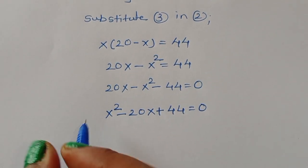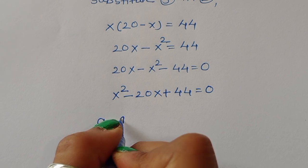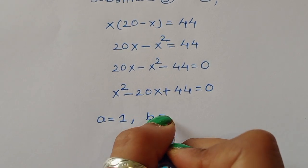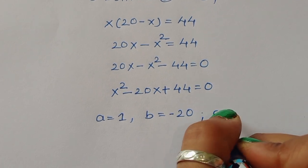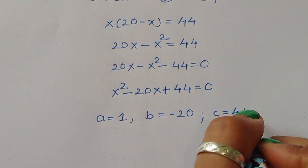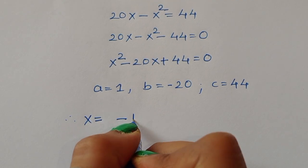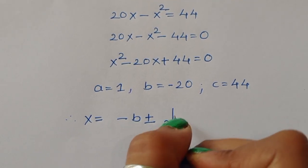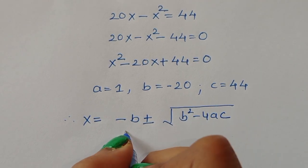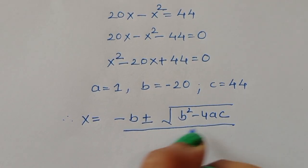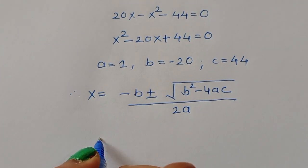Now we have one quadratic equation. We identify the coefficients: a equals 1, b equals minus 20, and c equals 44. The quadratic formula is x equals minus b plus or minus square root of b squared minus 4ac, all divided by 2a.